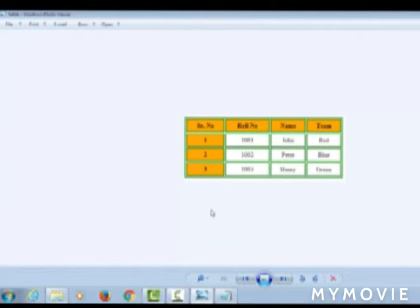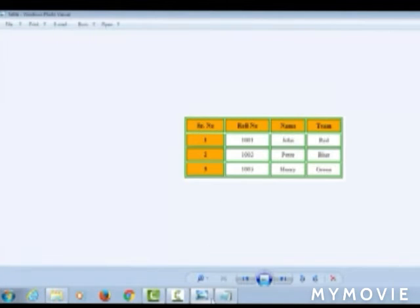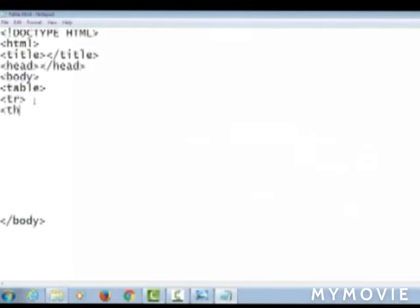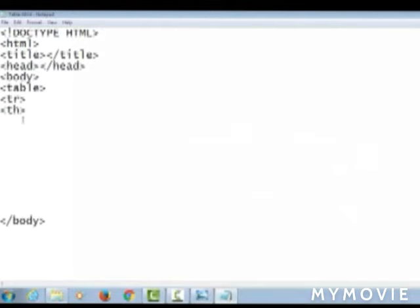First you have to create the table which contains 4 columns and 4 rows. So I am writing 4 tr tags and each tr tag contains 4 th tags. Tr means row and th means column.